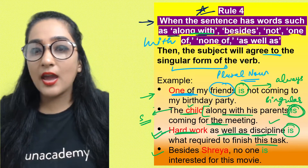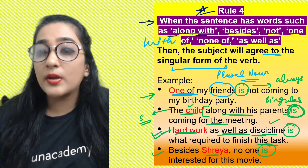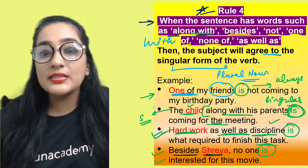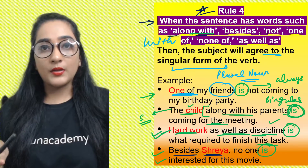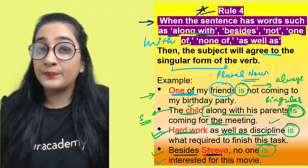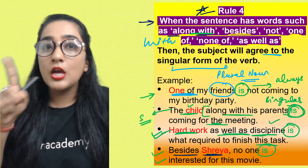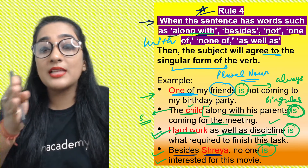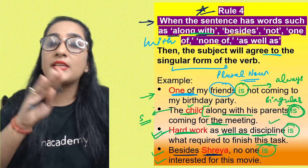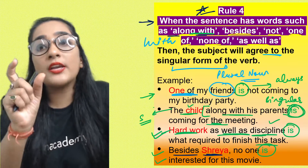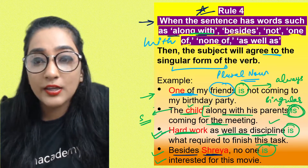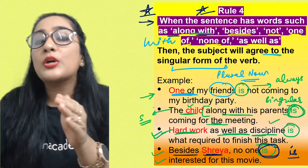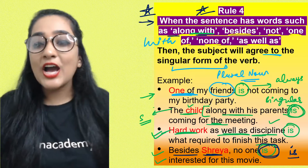'Besides Shreya, no one is entrusted for the movie.' Here 'besides' is one such word — we are talking about one single entity, no one. Even if it were 'besides children,' the answer is still 'no one is' because 'no one' is being considered as your subject and you use a singular verb accordingly. Whenever you find these words — along with, as well as, besides — do not consider the added phrase as part of your subject; always use a singular verb.